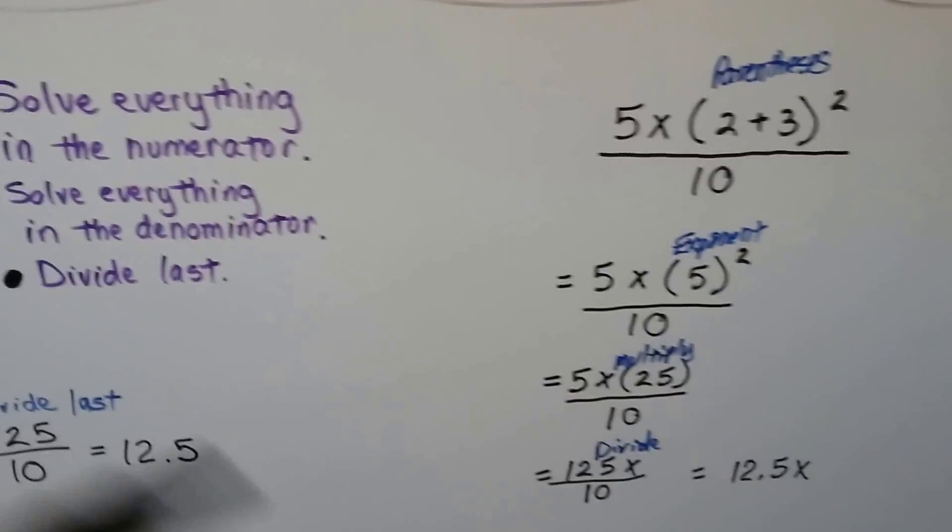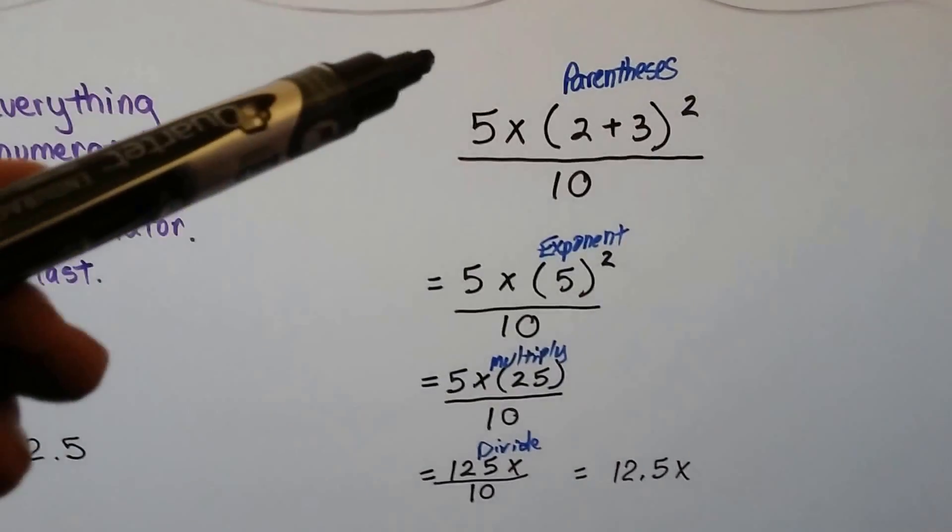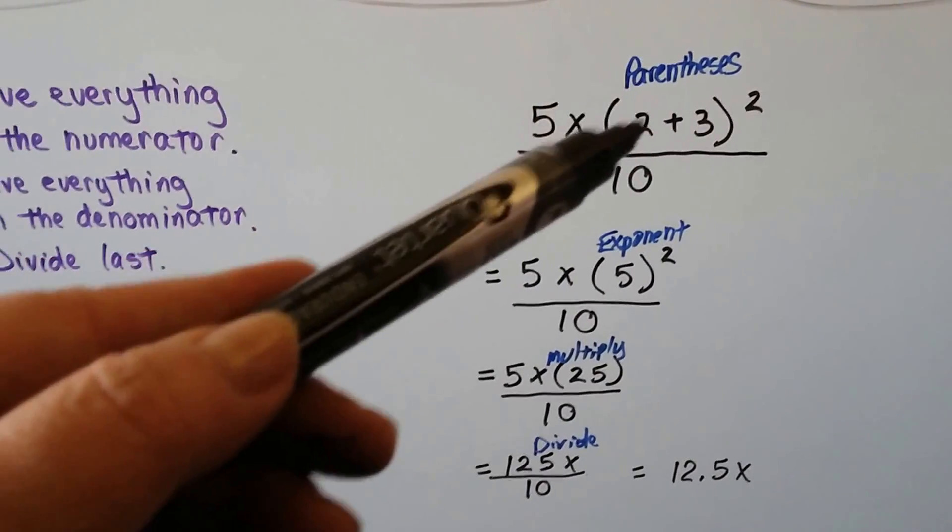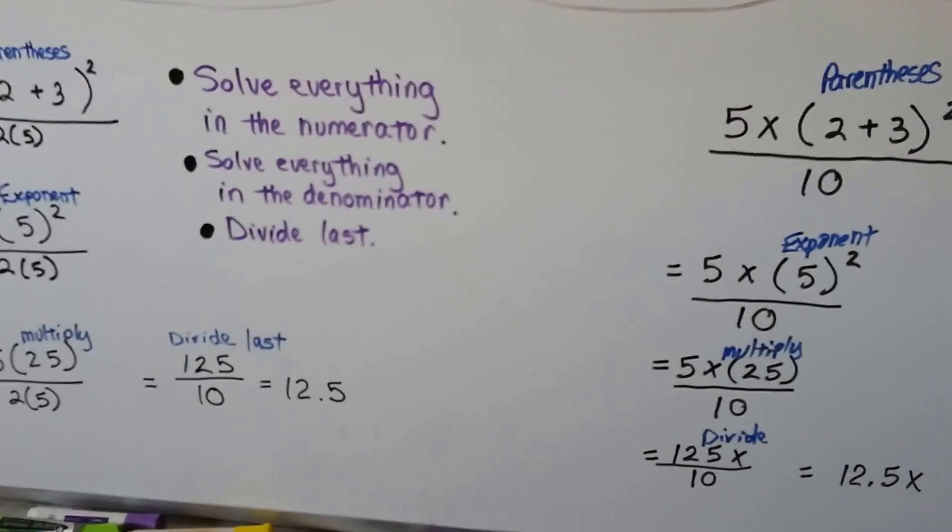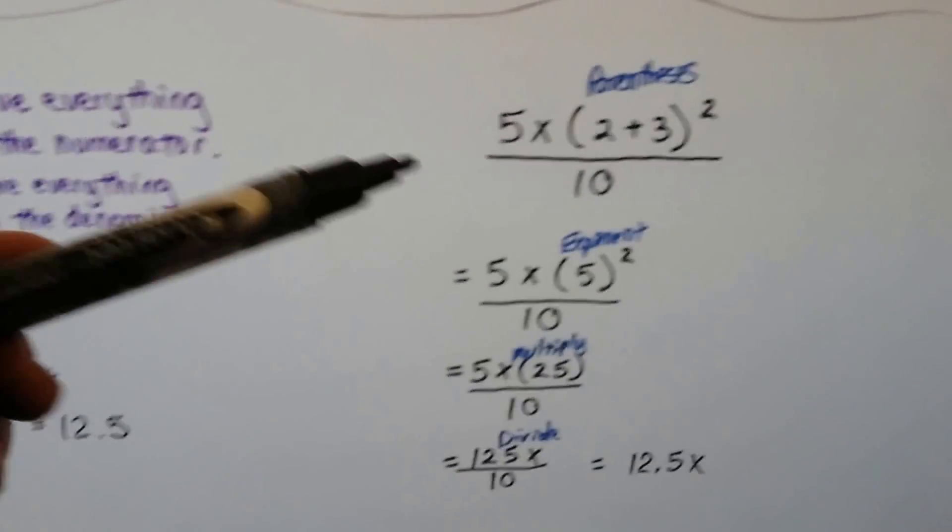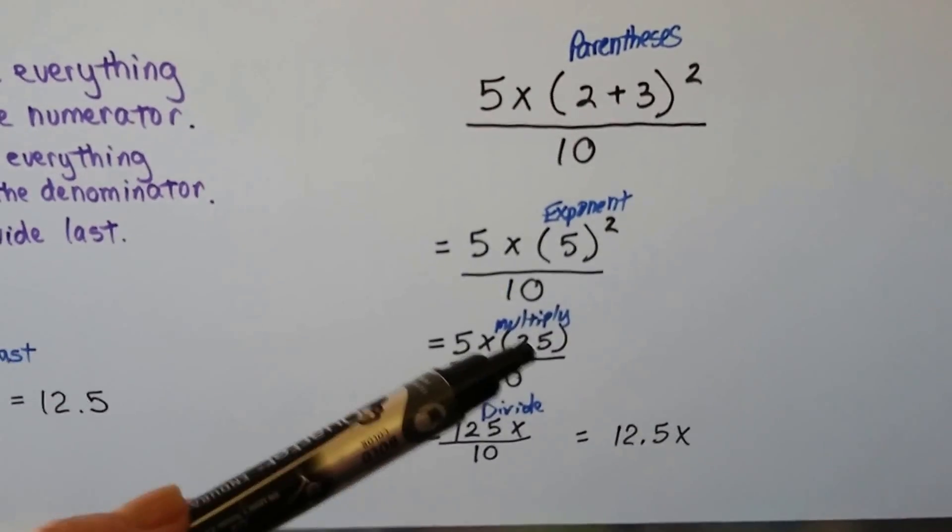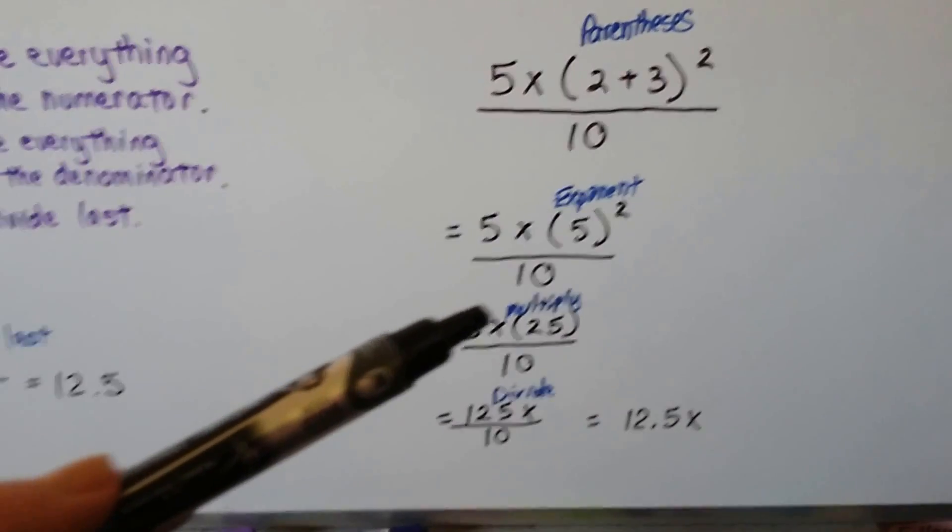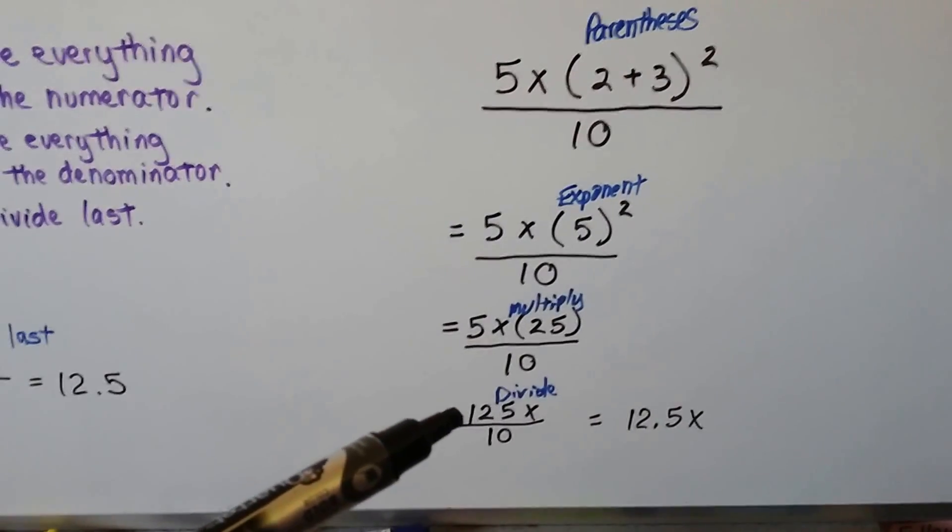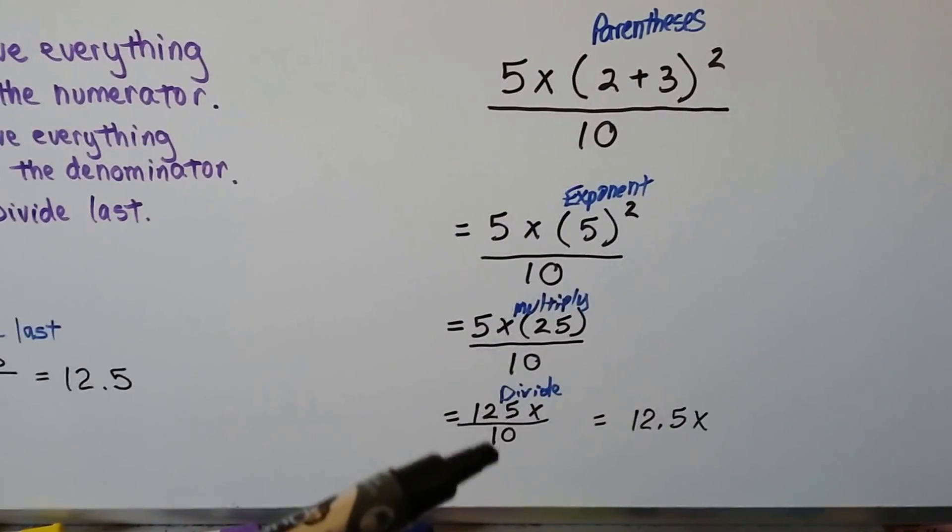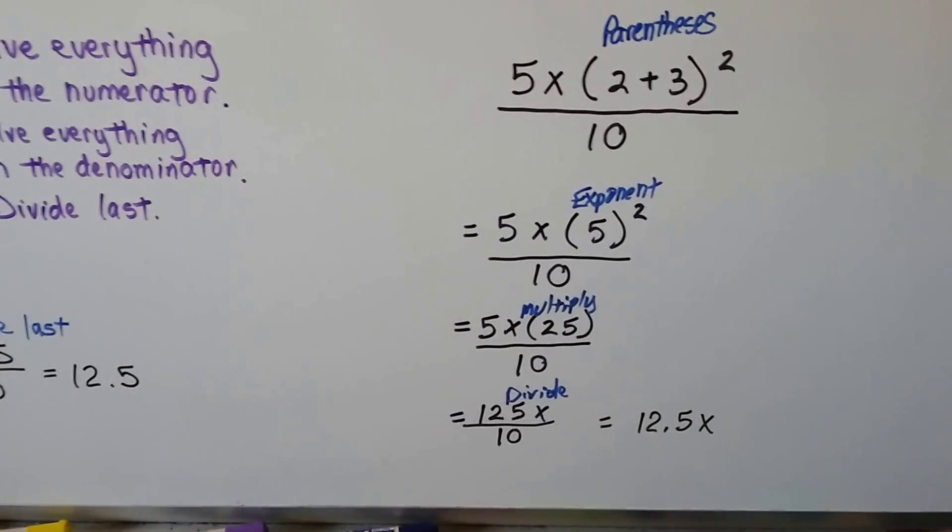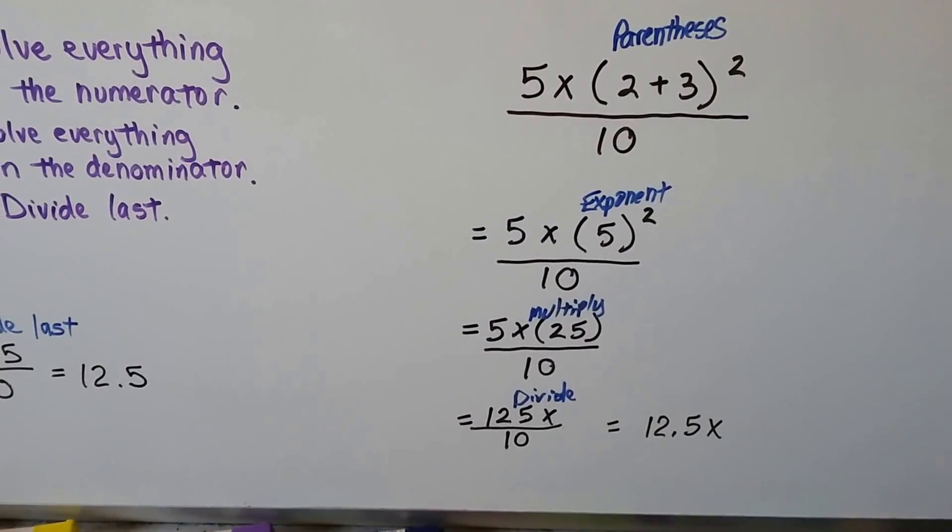We can even do it when there's variables in it. Here we have 5x and 2 plus 3 in parentheses with the 2. We just stuck an x there. Same thing. We do the parentheses first. We get a 5. We do the exponent. It's 25. We have 5x times 25. That gives us 125x. And, we divide it by 10. We get 12.5x.